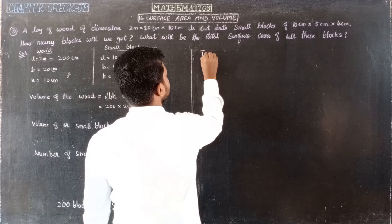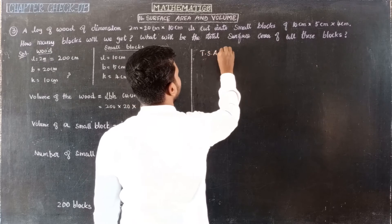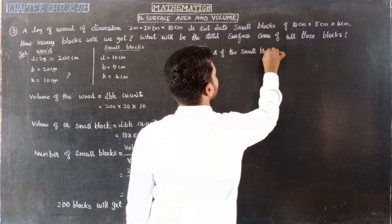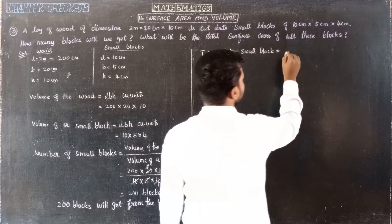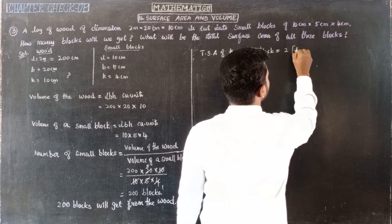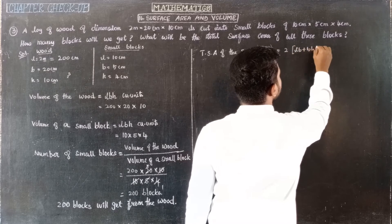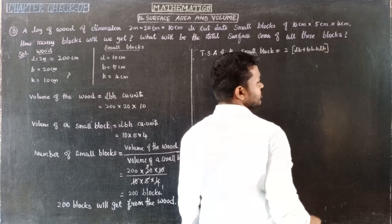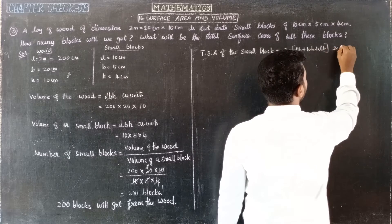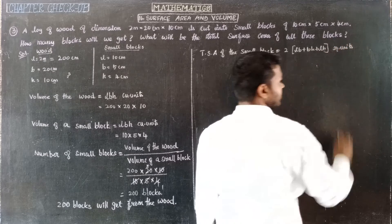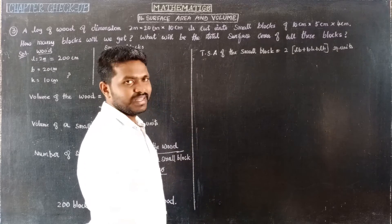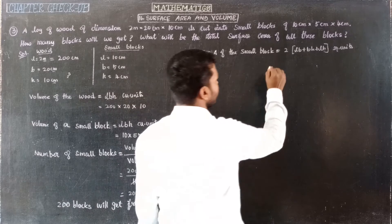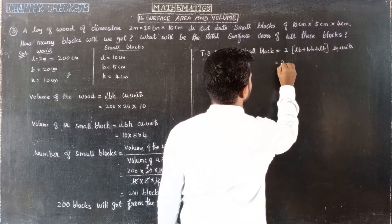The total surface area of a small block is equal to 2 × (LB + BH + LH) square units. This is the formula for the total surface area of a cuboid. The small block is in the shape of a cuboid, so we apply this formula.